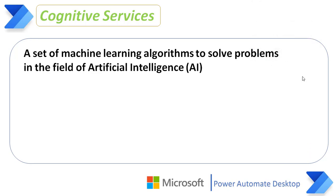Cognitive services are a set of machine learning algorithms to solve problems in the field of artificial intelligence, that is AI. The goal of cognitive services is to democratize AI by packing it into descriptive components that are easy for developers to use in their own apps. Cognitive services are a set of APIs, SDKs and services available to developers to make their applications more intelligent, engaging and discoverable.